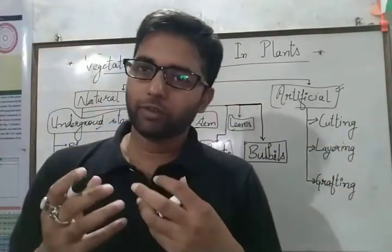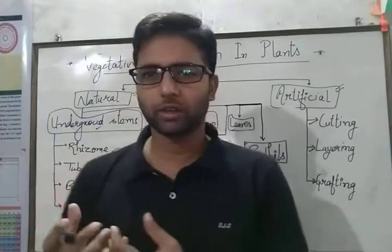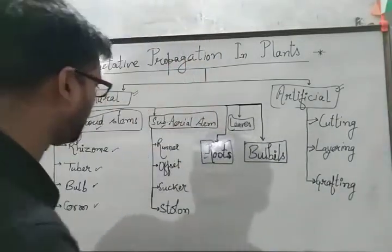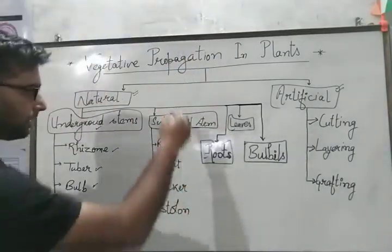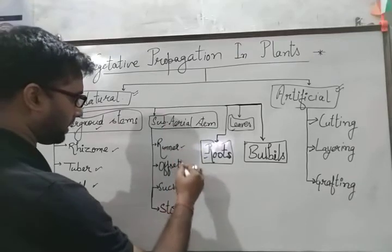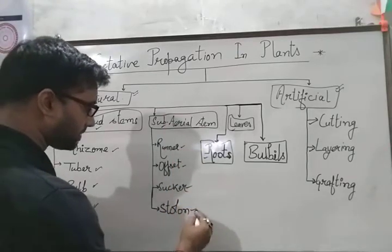Some instances of sub-aerial stems are runner, offset, sucker, and stolon.